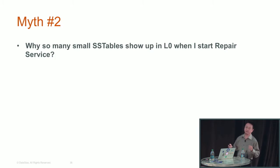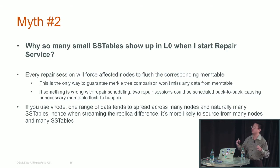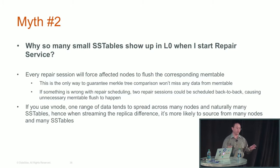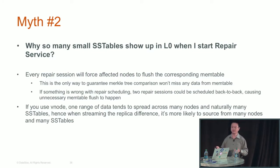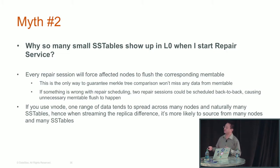Myth two: why do so many small SSTables show up whenever I start the repair service? Because every repair session forces affected nodes to flush the corresponding memtable — the only way to guarantee all data is included when generating the Merkle tree for comparison. If a repair session runs away, scheduling sessions back to back, you trigger too many flushes and generate too many L0 SSTables. And if you use vnodes, one range of data tends to spread across many SSTables, so streaming replica differences sources from many SSTables, further accumulating L0 SSTables.